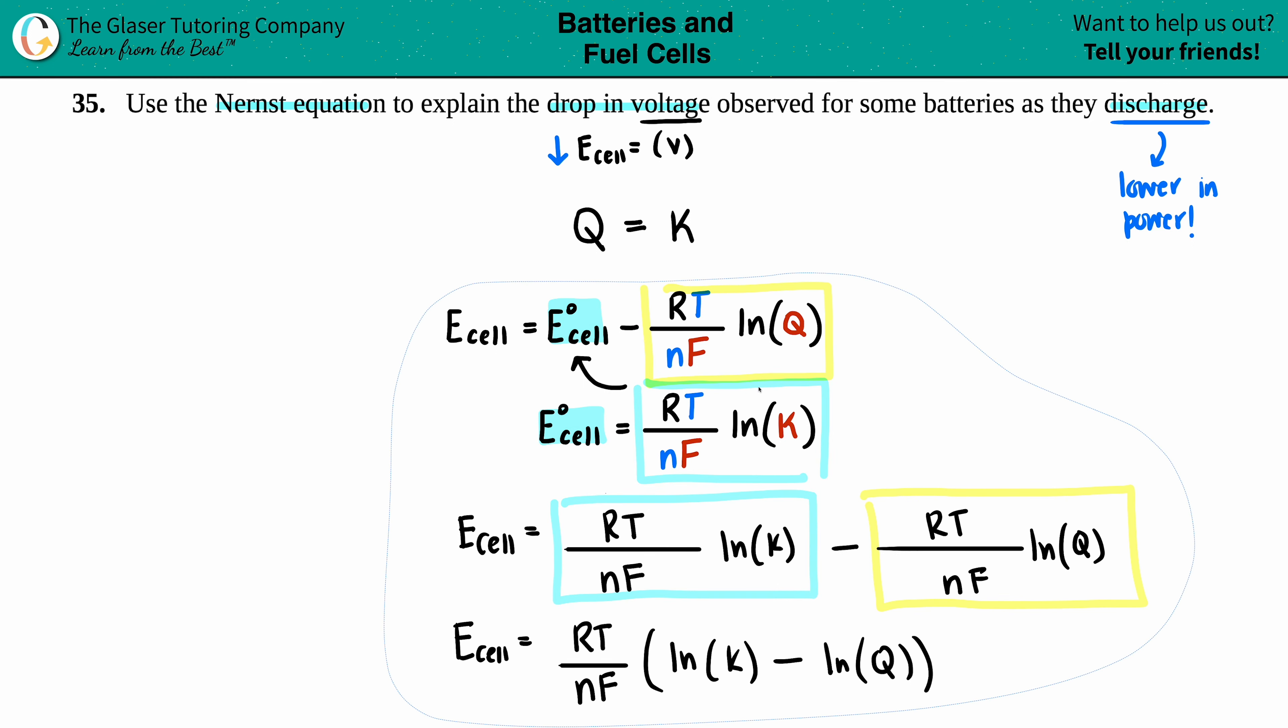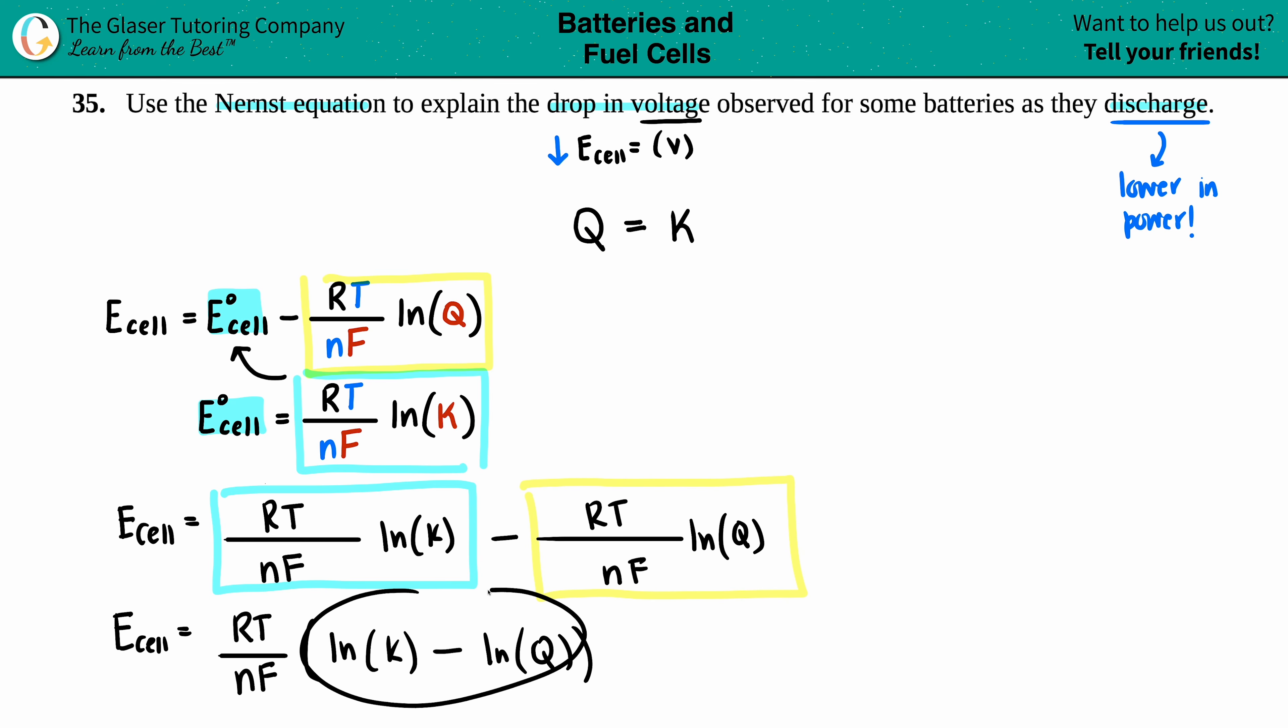Okay, we're getting there. We can simplify this even more. Remember, going back to basic algebra, if you have ln(A) minus ln(B), this is the same as ln(A/B). So the E_cell equals RT divided by nF, and now I'm just going to have it as natural log of K over Q.